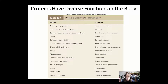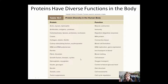Here are some examples of diverse protein functions. Actin, myosin, and dystrophin are important in muscle contraction. Antigens, antibodies, and cytokines are important in immune system response. Collagen, elastin, and fibrillin are found in connective tissue. Later in the course we'll see how mutations in genes coding for, for example, fibrillin can lead to genetic disease such as Marfan syndrome.